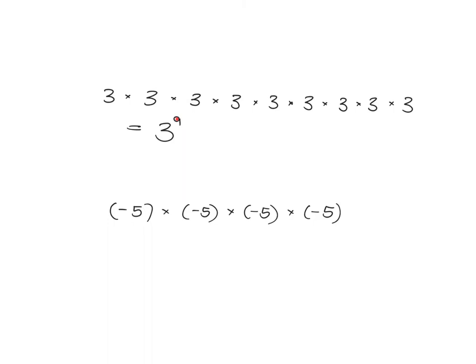So this little 9 just tells us that we have nine 3's that are all multiplied together. Similarly, if we have negative 5 times negative 5 times negative 5 times negative 5, what we have is four negative 5's that are multiplied together, so we've got negative 5 to the power of 4.